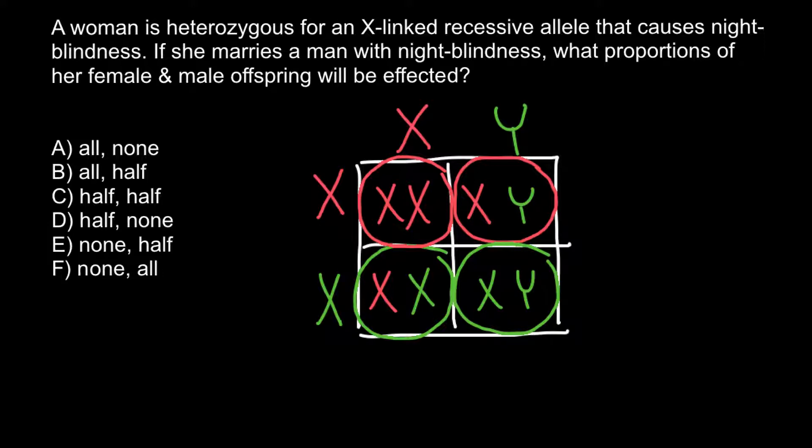So basically, half and half. The mother is a carrier but phenotypically normal, and the father is affected. As you can see, half and half is the answer: C.